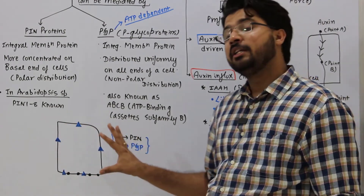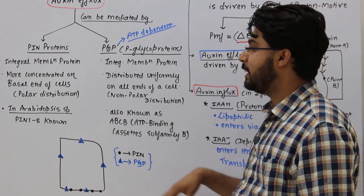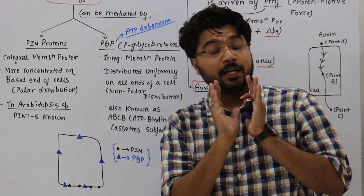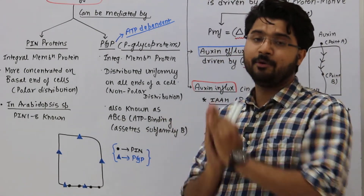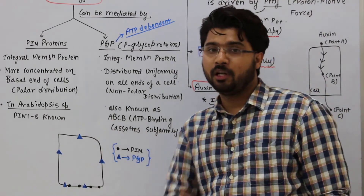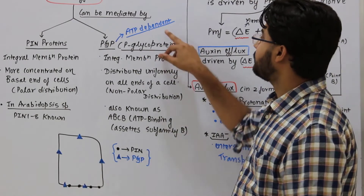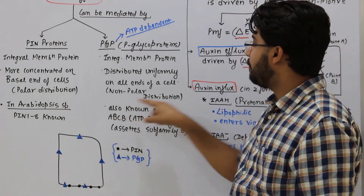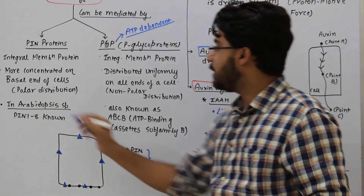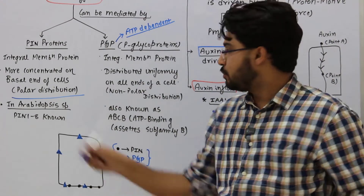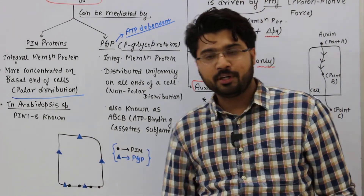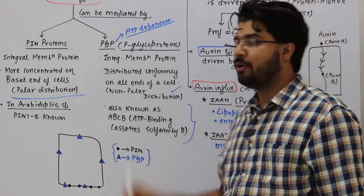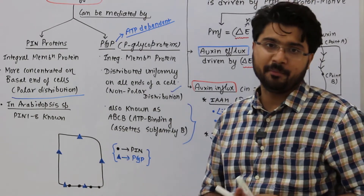PGP proteins are present everywhere — base, apex, and sideways — which is called non-polar distribution. PIN protein distribution at the base is called polar distribution, as it drives unidirectional transport. In Arabidopsis, which is the model organism in plant physiology (like Drosophila for animals), eight PIN proteins (PIN1–PIN8) are known. PGP proteins, also known as ABCB (ATP-binding cassette sub-family B), are ATP-dependent and uniformly distributed.